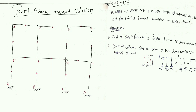To obtain the analysis results — shear force, bending moment, and axial forces on the columns — we follow a five-step procedure in the portal frame method.